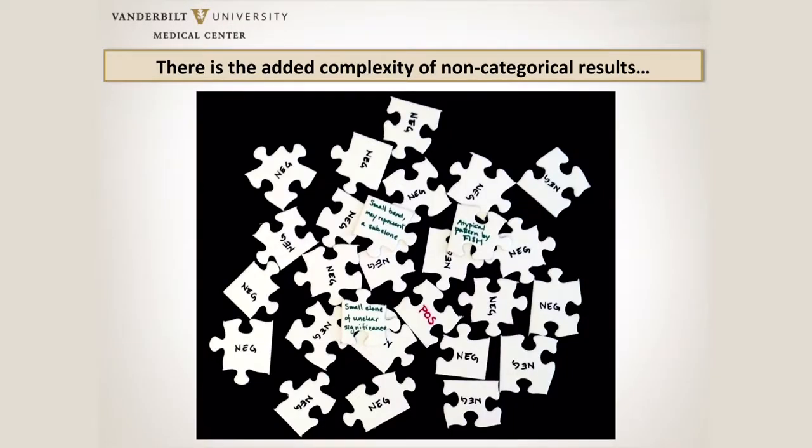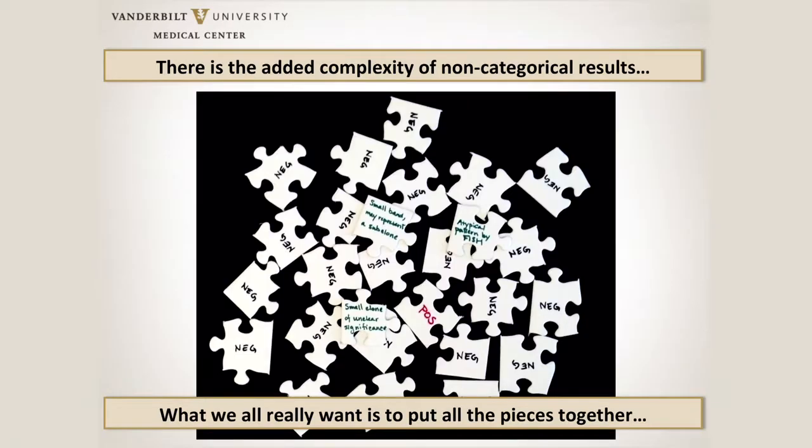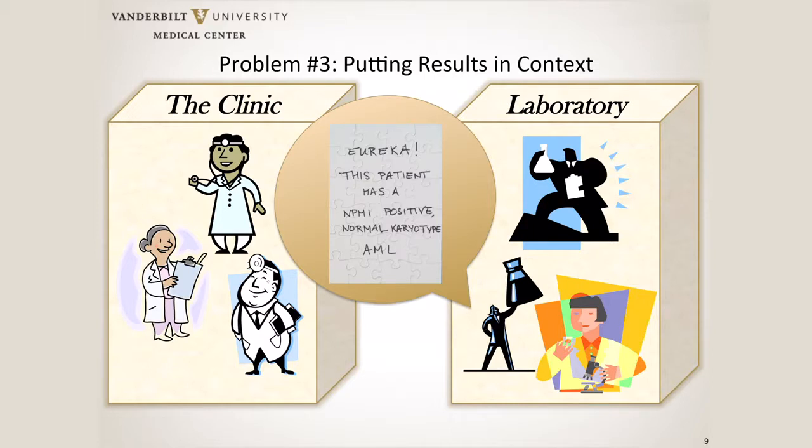There's the added complexity of non-categorical results. We've all sat there looking at T-gamma gene rearrangement studies going, is that a real clone or not? We have a lot of couched terms like 'small clone of unclear clinical significance' or 'atypical pattern by FISH.' How can a clinician really dig through all of this and come to an understanding? What they really want is the whole puzzle put together — 'this patient has an NPM-positive normal karyotype AML' — and that's what we want to be giving them in a comprehensive report.